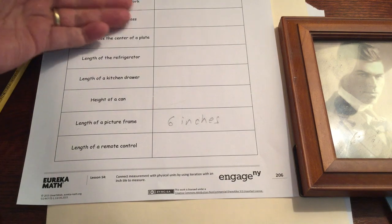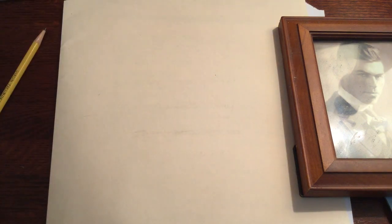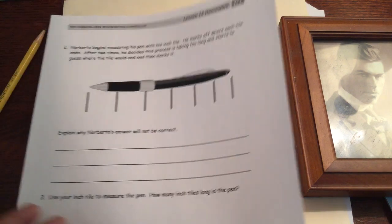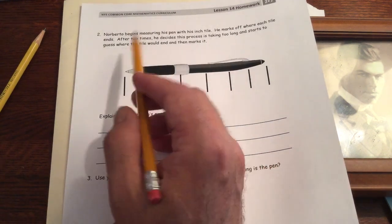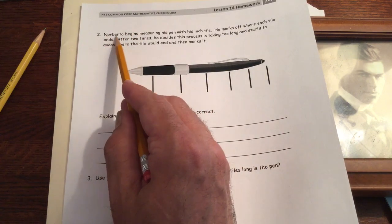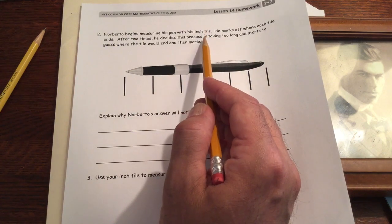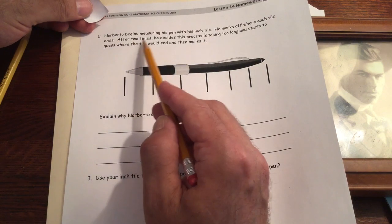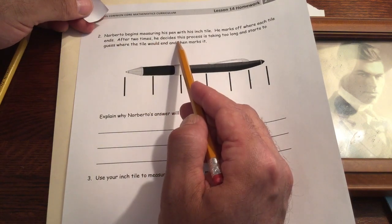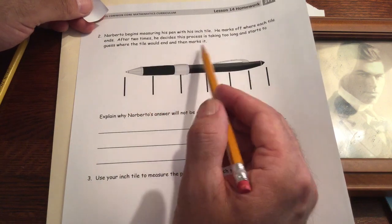Now I'll leave it to you to measure the other things with your inch square, just counting inches. And then there's some questions here on the next page. We'll work on those. Norberto begins measuring his pen with his inch tile. He marks up where each tile ends. After two times, he decides this process is taking too long and he starts to guess where the tile would end and then marks it.